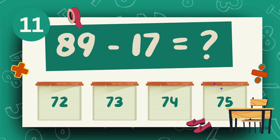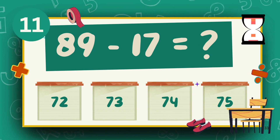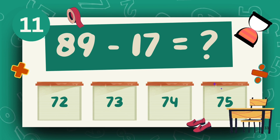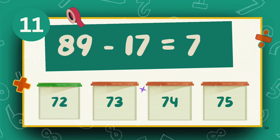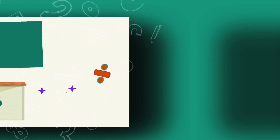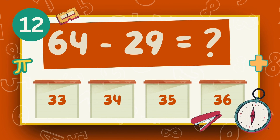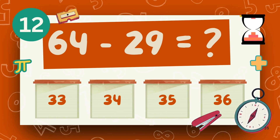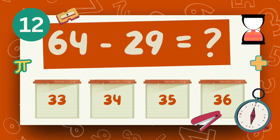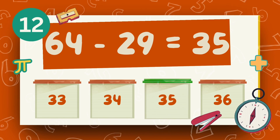What is 89 minus 17? The answer is 72. What is 64 minus 29? The answer is 35.